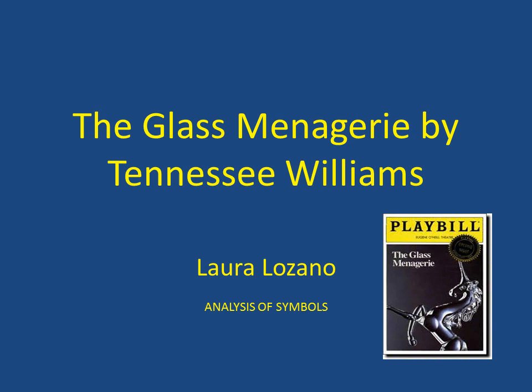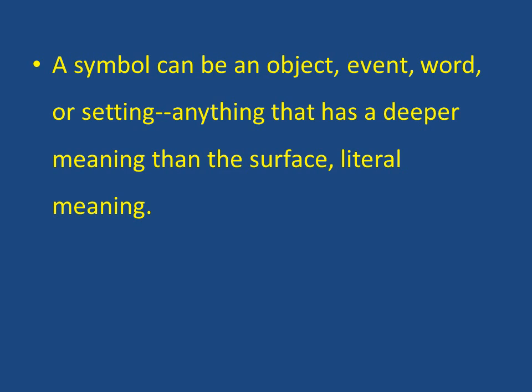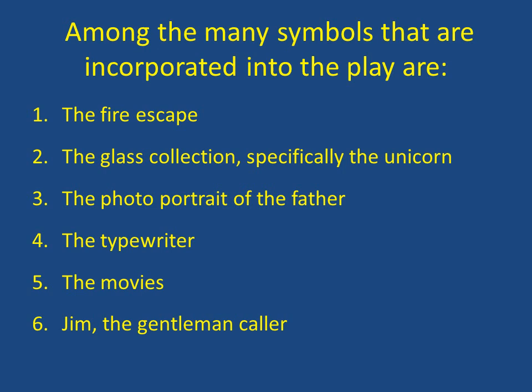The Glass Menagerie by Tennessee Williams. My name is Laura Lozano and my presentation is an analysis of symbols. A symbol can be an object, event, word or setting — anything that has a deeper meaning than the surface literal meaning. The playwright uses many symbols throughout the play to reveal more depth to the characters and the situation. The symbols constantly relate to the themes of escape, abandonment and illusion.